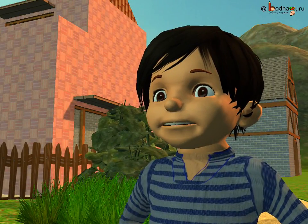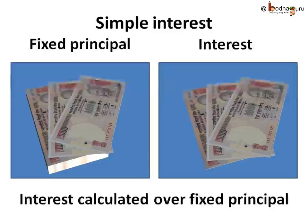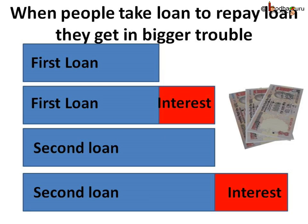That is, they had to pay lesser extra money for the principal borrowed. This way, when interest is calculated on a fixed principal, that interest is called simple interest. But a few people take another loan to repay a loan — this is the first loan, then interest gets added, then that person takes a second loan to repay the whole amount, so the loan becomes bigger and the interest becomes bigger too. This can lead to a vicious cycle of remaining in debt.